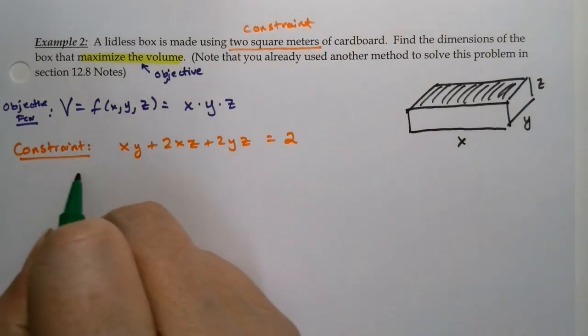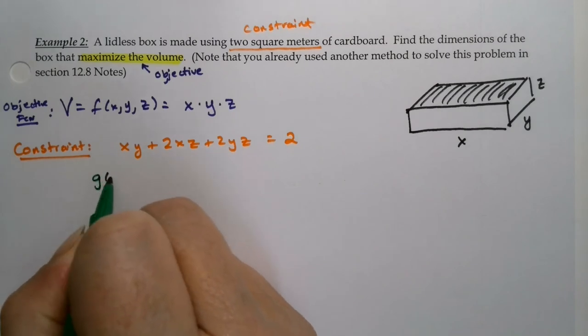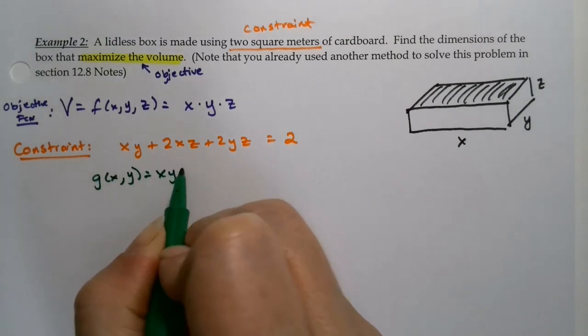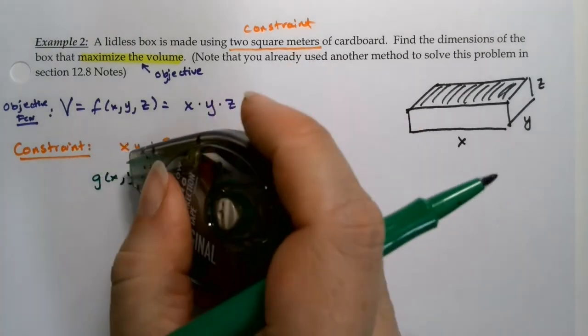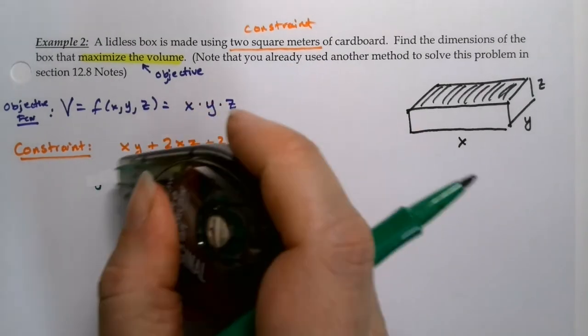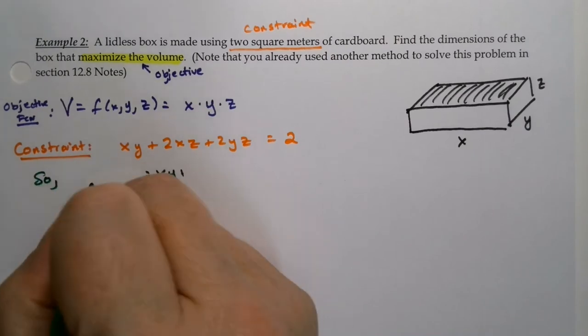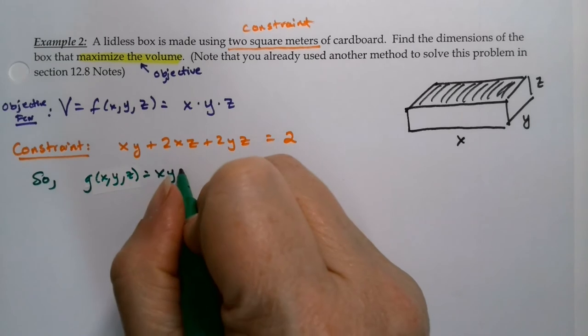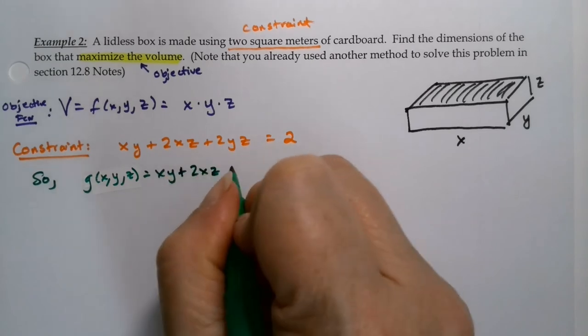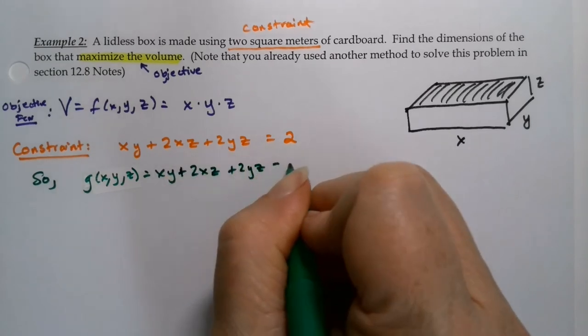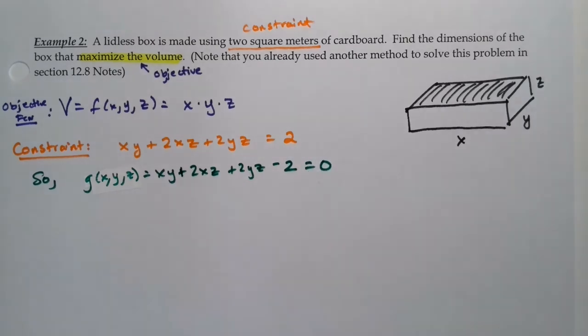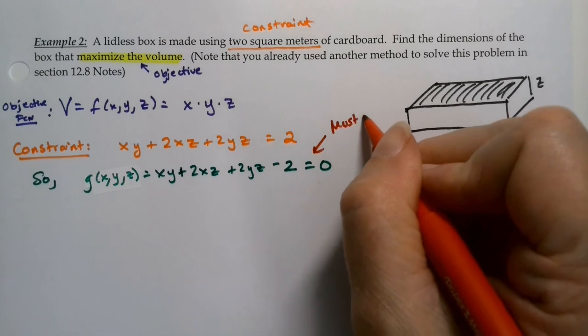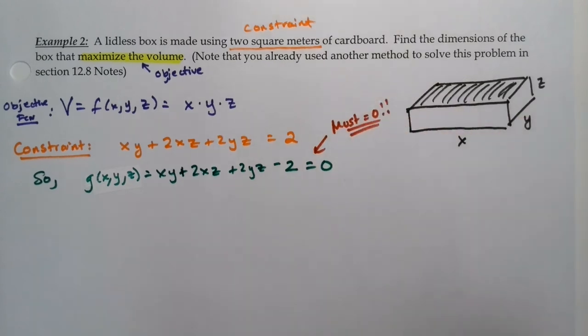Well, this is not equal to zero. So we have to change that to a new function. So our constraint becomes g of x, y, z is equal to xy plus 2xz plus 2yz minus two has to be equal to zero. It must be equal to zero.